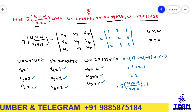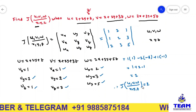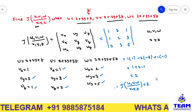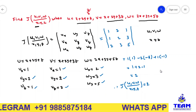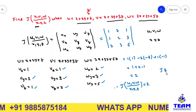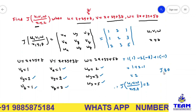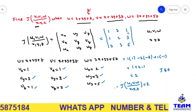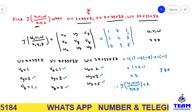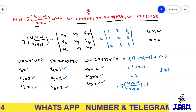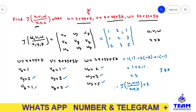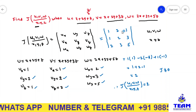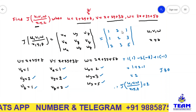So this is the Jacobian value. Friends, you observe the Jacobian value is not equal to 0. So you can say u, v, w are functionally independent. Thank you for watching this video.